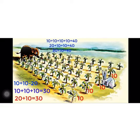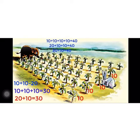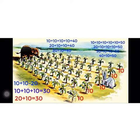Fourth row is 10 banana trees. 10 plus 10 plus 10 is equal to 40. 30 plus 10 is equal to 40. 10 plus 10 plus 10 is equal to 50. 30 plus 10 is equal to 50.